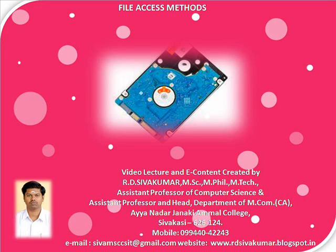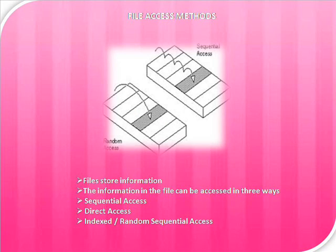A pleasant welcome to all. Now we are going to study about File Access Methods. File stores information, and the information in the file can be accessed in three ways: the first way is sequential access, the second way is direct access, and the third way is indexed or random sequential access.